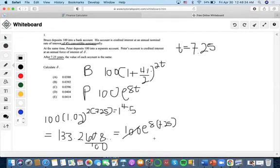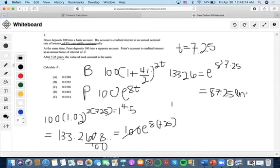And then we get 1.3326 equals to e to the 7.25 delta. Now we could use logarithms to bring this exponent down because how else are we going to get delta? So we do 7.25 delta ln(e). And then once we put ln on this side, we have to do ln on the other.